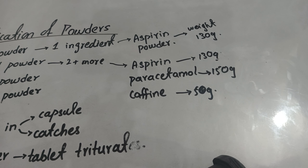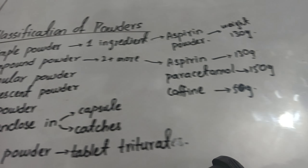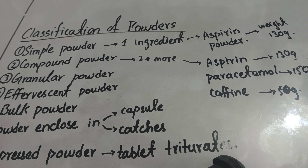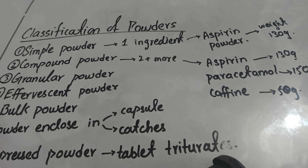So this was about the powders — we have discussed their classification, their types, and how to make them. In the next lecture we will discuss other types of powders: granular powder and effervescent powders, their types, preparations, and some examples.